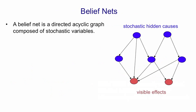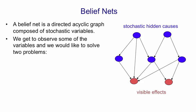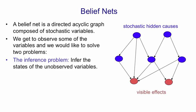A belief net is a directed acyclic graph composed of stochastic variables. In general, you might observe any of the variables, but I'm going to restrict myself to nets in which you only observe the leaf nodes. So we imagine there are unobserved hidden causes, which may be layered, and they eventually give rise to some observed effects. Once we observe some variables, there are two problems we'd like to solve. The first is the inference problem: to infer the states of the unobserved variables. We can't infer them with certainty, so what we're after is probability distributions over unobserved variables, which may be large cumbersome things with an exponential number of terms.